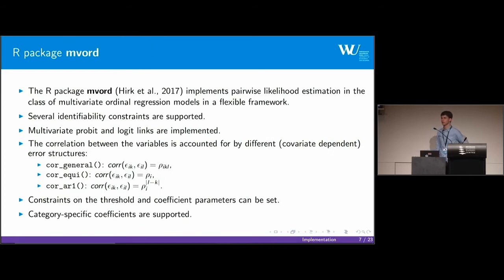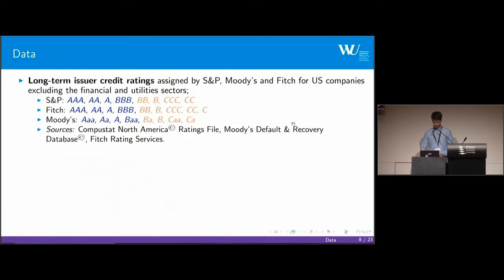We use pairwise likelihood estimation for estimating the model parameters. Because in ordinal models absolute scale and absolute location are not identifiable, we support several identifiability constraints. In addition to a multivariate probit link, a multivariate logit link is implemented. For the correlation between the variables we support different error structures: a general correlation and covariance structure, an equi-correlation structure, and an AR1 correlation structure. In addition we support constraints on the threshold as well as on the regression coefficient, and category-specific coefficients are supported as well.